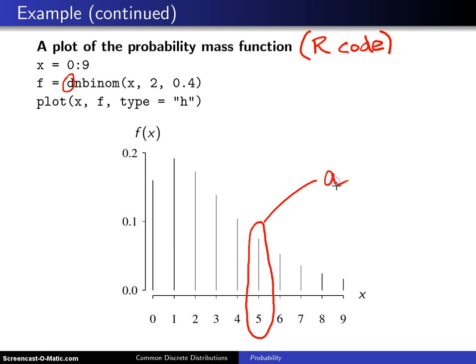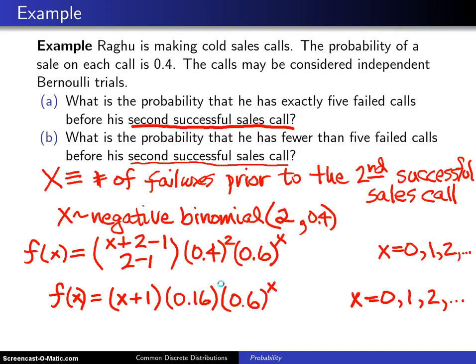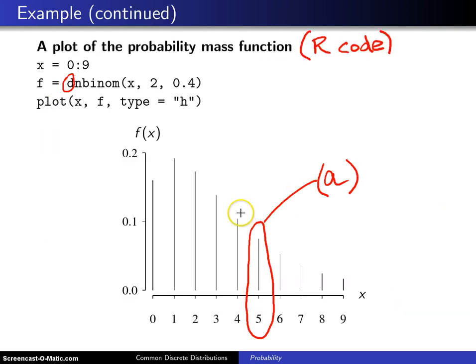Furthermore, the second part, part b, asks for the probability that he has fewer than five failed calls before his second successful sales call. So on part b, that will be the sum of these heights right here.